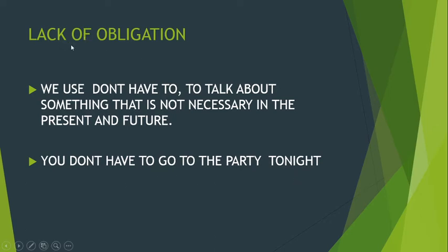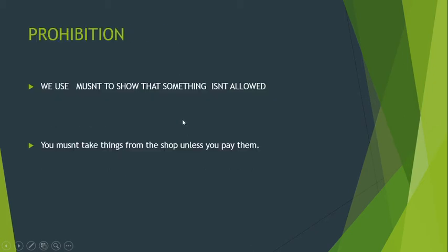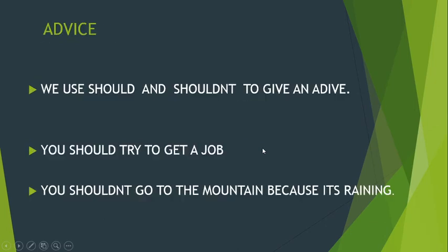We only use 'don't have to' for lack of obligation. The next one is prohibition. We use 'must not' to show that something isn't allowed — usamos 'must not' para mostrar que algo no está permitido, por eso es prohibición. For example: 'You must not take things from the shop unless you pay for them' — no debes tomar cosas de una tienda a menos que pagues por ellas. This is the reason 'must not' is used for prohibition — algo que nos están prohibiendo.